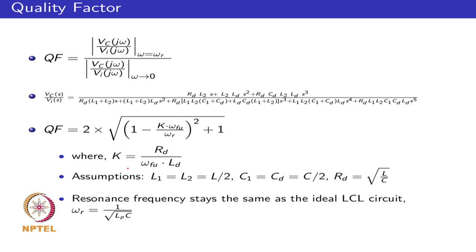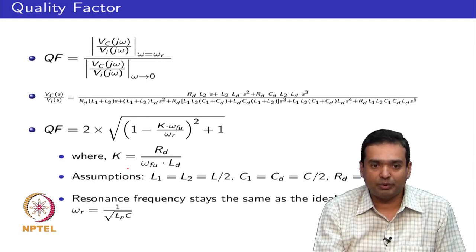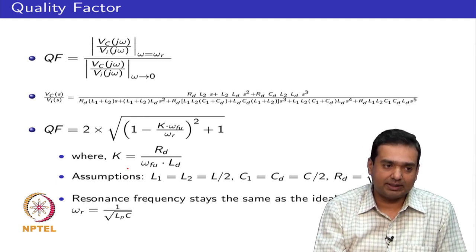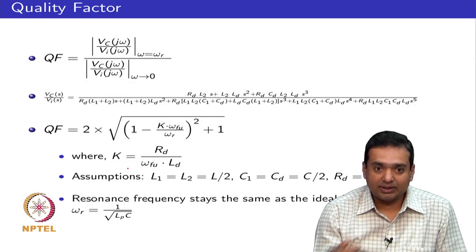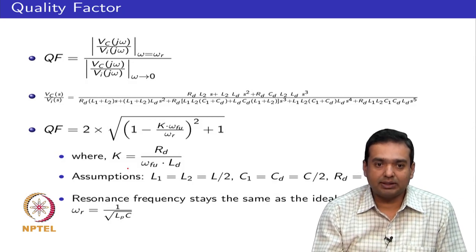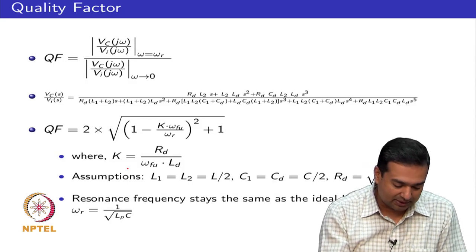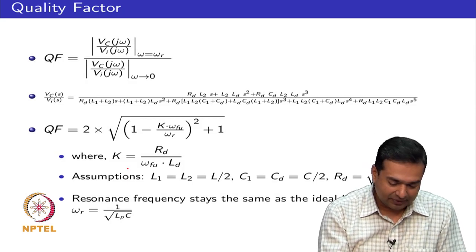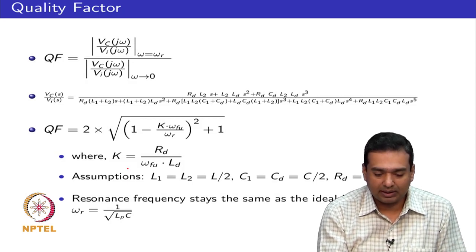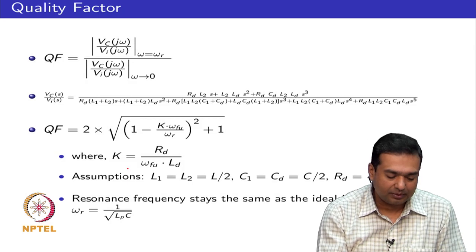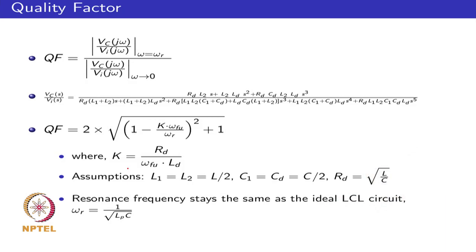The power loss is evaluated at the two major frequencies of excitation: the fundamental frequency and the frequency at which the major ripple occurs, which is the switching frequency. Now that one can have ways to quantify the quality factor and the power loss, one can look at how to design the passive damping network.